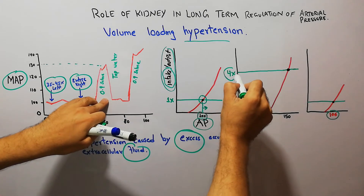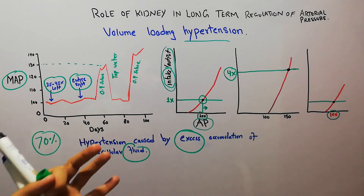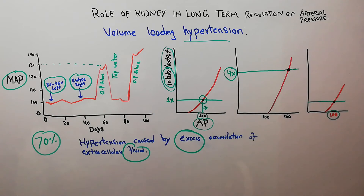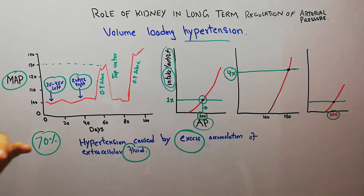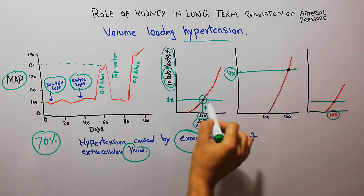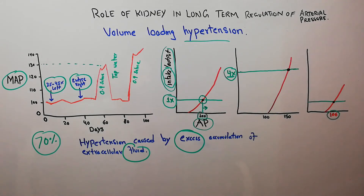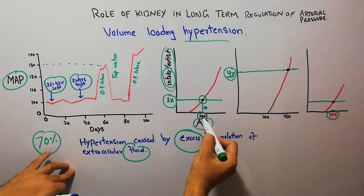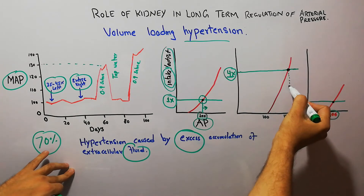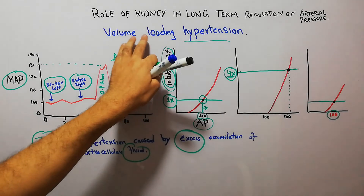When dogs are given salty or saline water, they drink more because any mammal — human or animal — drinks more fluid when salt is added to their water compared to plain tap water. The intake increases up to four times, from 1x to 4x. This fourfold increase in fluid intake has led to an increase in arterial pressure from 100 mmHg to 150 mmHg — this is volume loading hypertension.